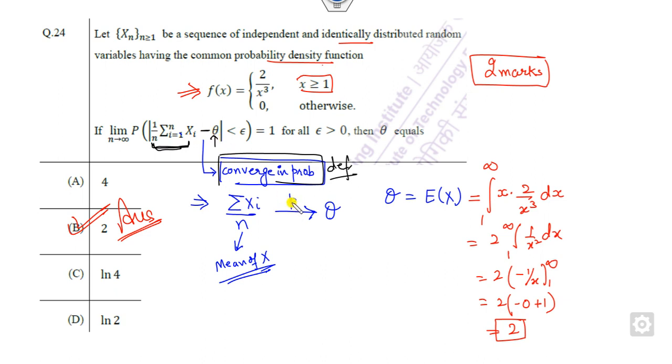And you know that this is nothing but the mean of this variable X, and each of the X_i's are here. Since they are IID, you can see this is nothing but my expected value of this X computed here. So this is the way you can solve this problem in a very simple manner.